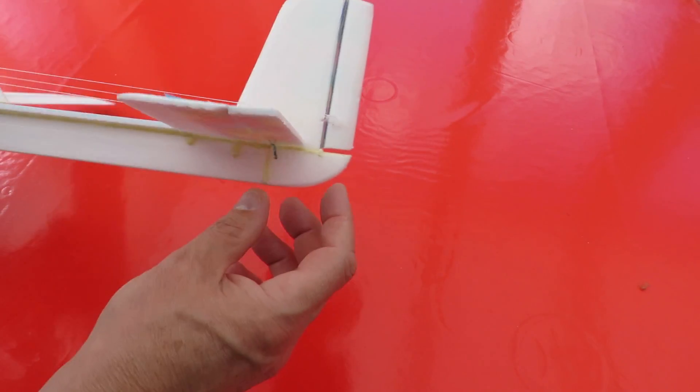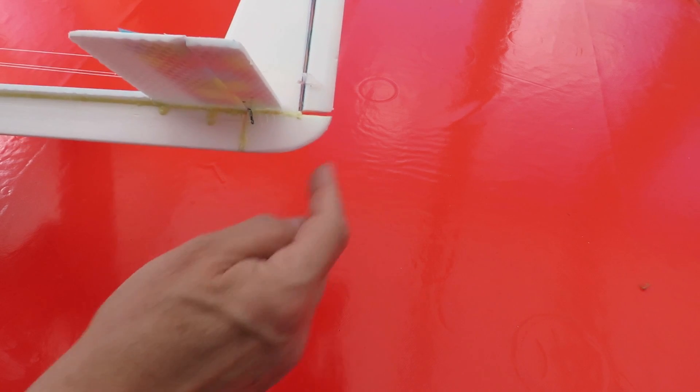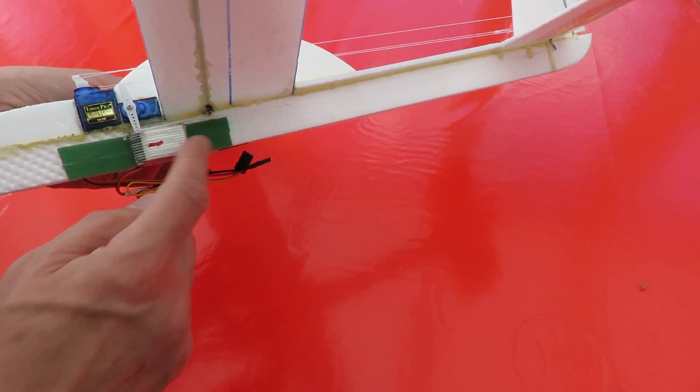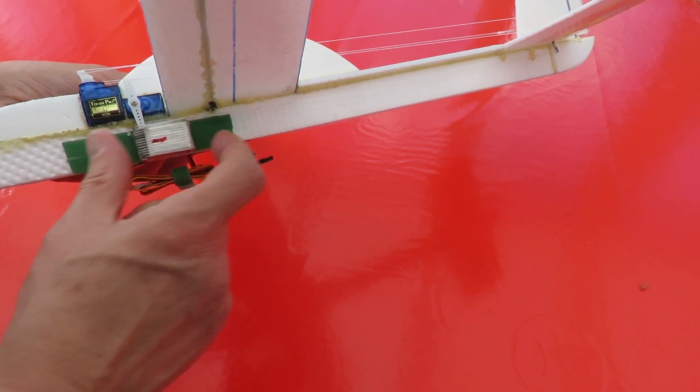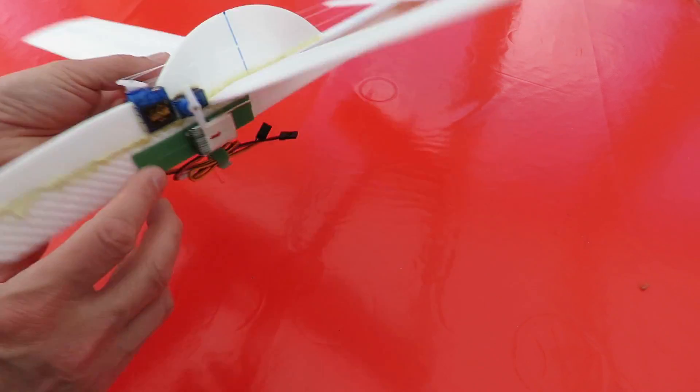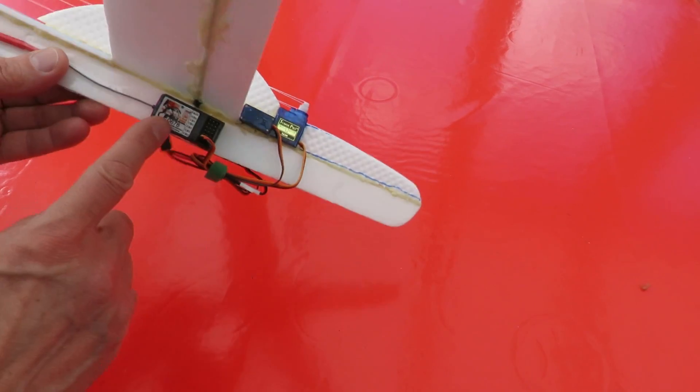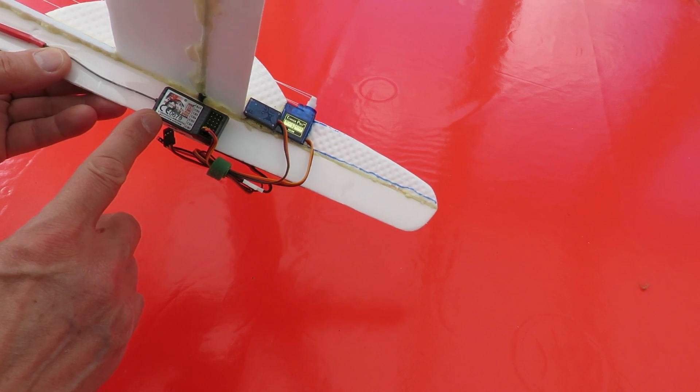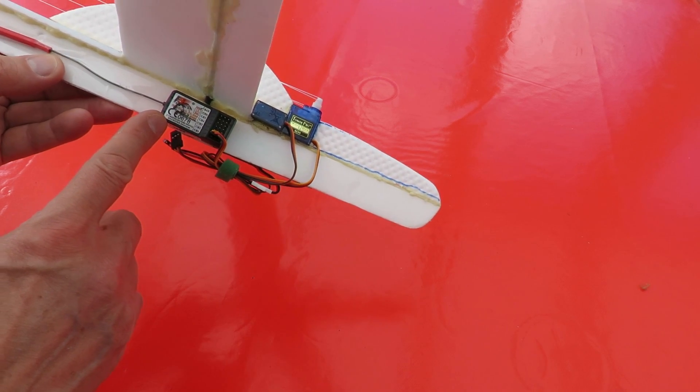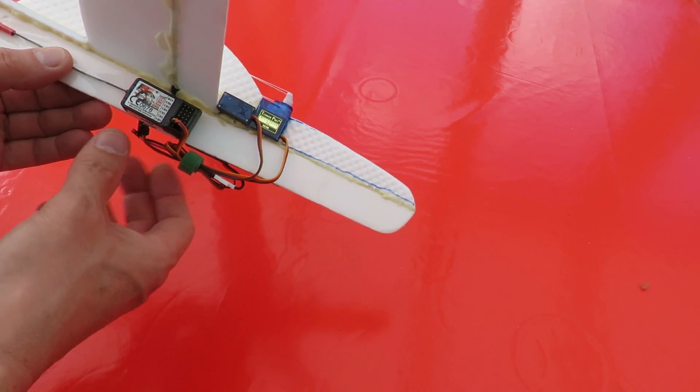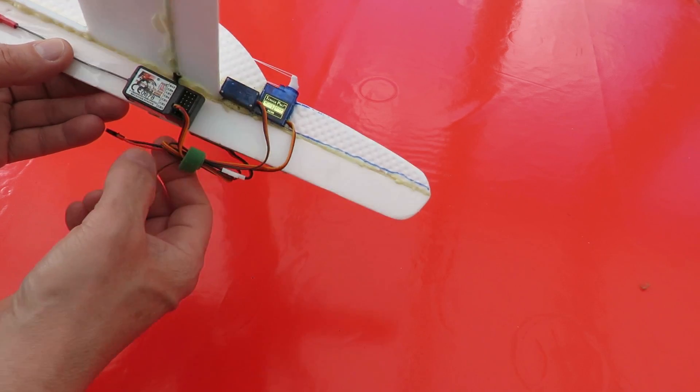Got a small LiPo battery there, and that's velcro so I can move it backwards and forwards to adjust the center of gravity. Flysky six-channel receiver, which will only be using two channels, and the aerial is just taped along the fuselage there.